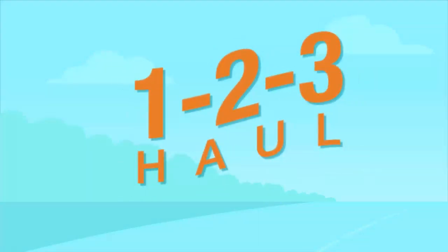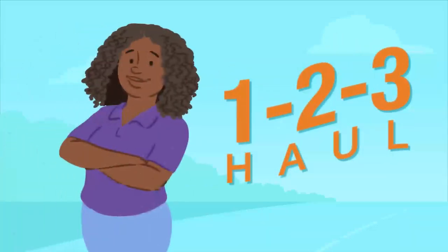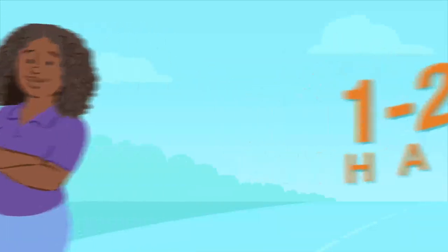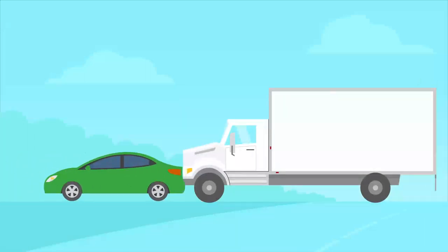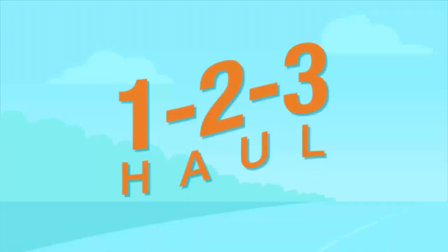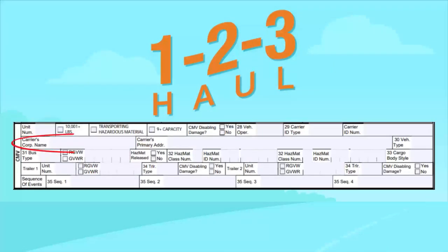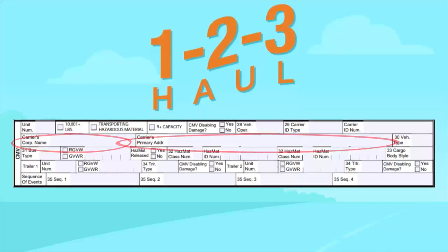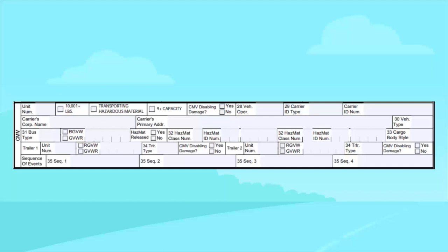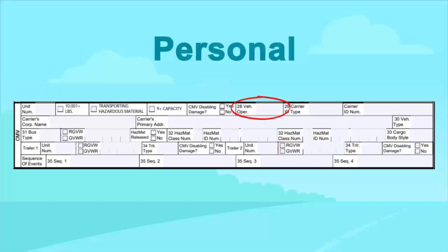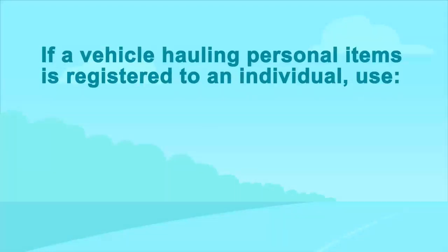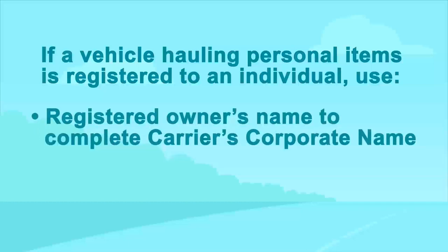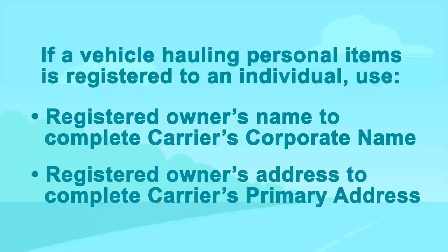123 Hall is the registered owner and operator of a motor vehicle rented to Jane Doe under a short-term rental agreement. The motor vehicle is involved in a crash while being operated by Jane Doe to move household furniture. In this situation, 123 Hall is the motor carrier and should be used to complete the carrier's corporate name and the carrier's primary address fields. Note that complete information may not be available for all carrier-related fields if the vehicle is being operated for personal use and the vehicle operation field is coded as personal. If a vehicle registered to an individual is being used to haul personal items, use the registered owner's name and address to complete the carrier's corporate name and carrier's primary address fields.